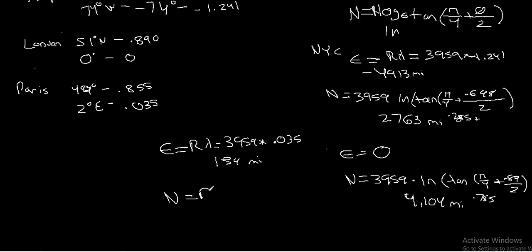The northing is the one that we're more concerned with. So again, this is going to be R times the ln of the tangent of pi over 4 plus theta over 2. So plugging in values, that's going to be 3,959 times the ln of the tangent of pi over 4 plus our theta is going to be 0.855 over 2.